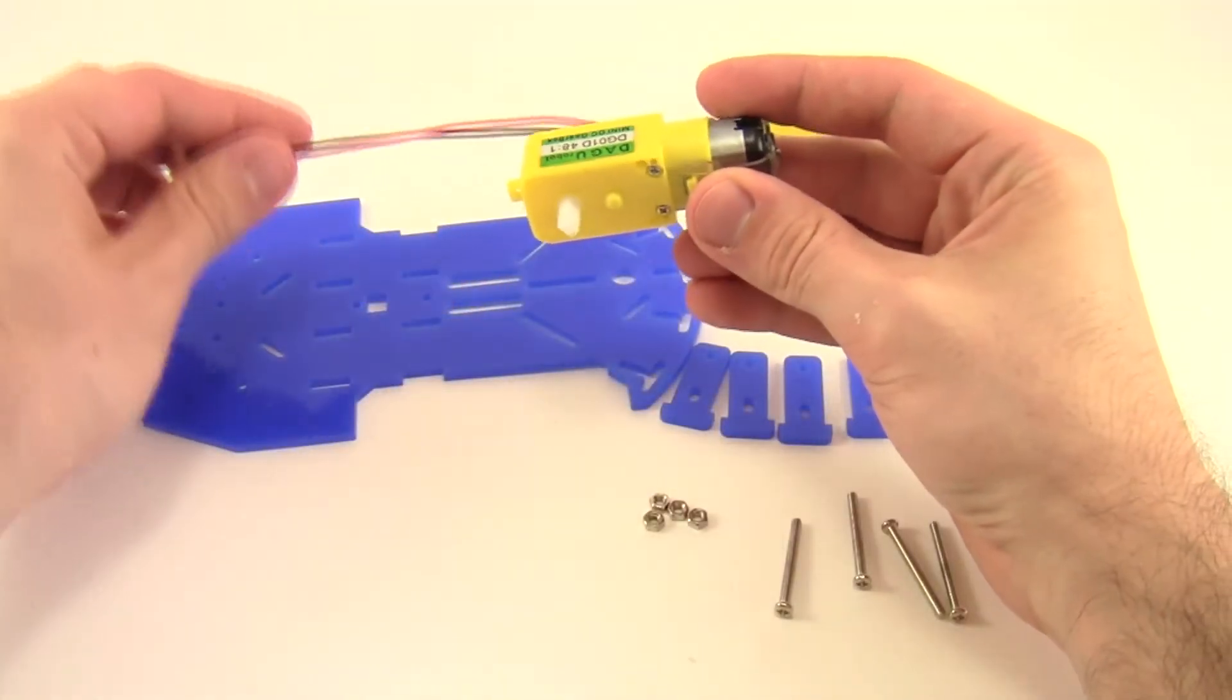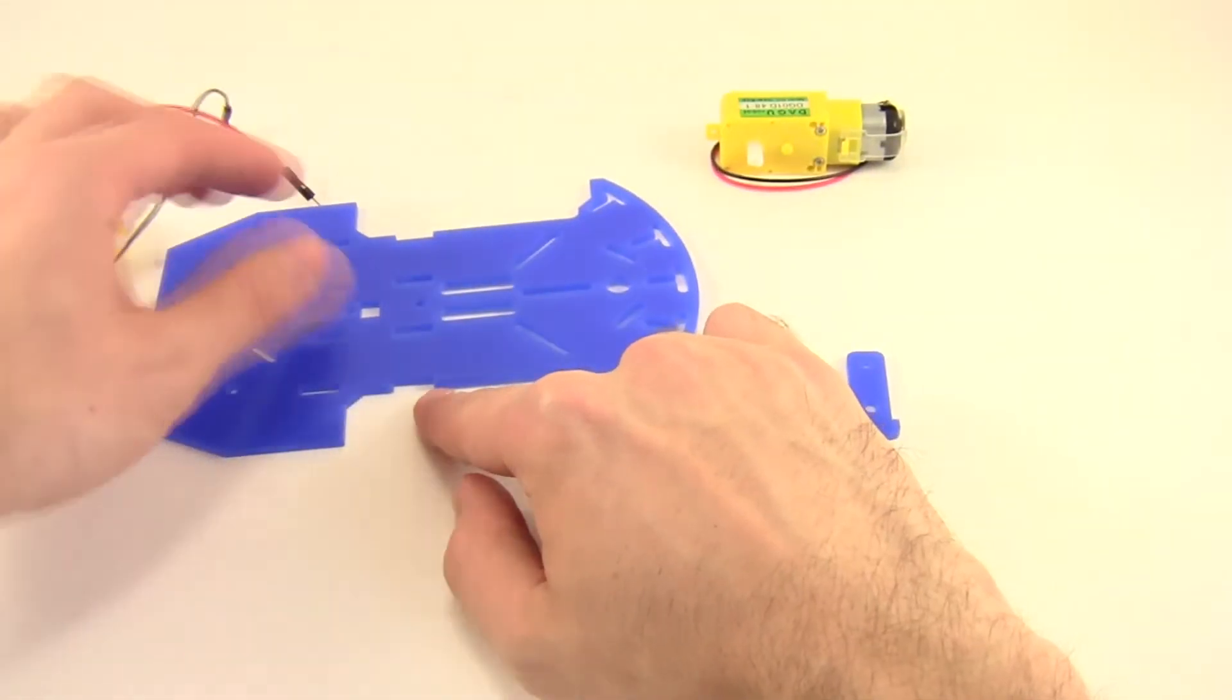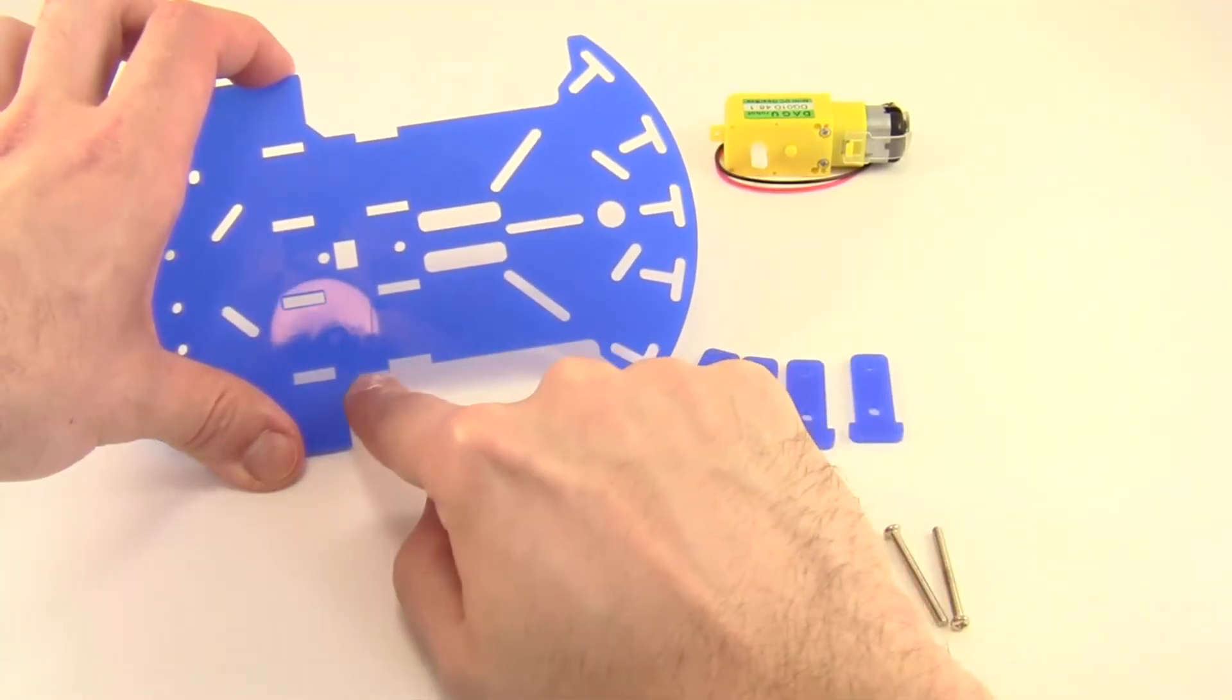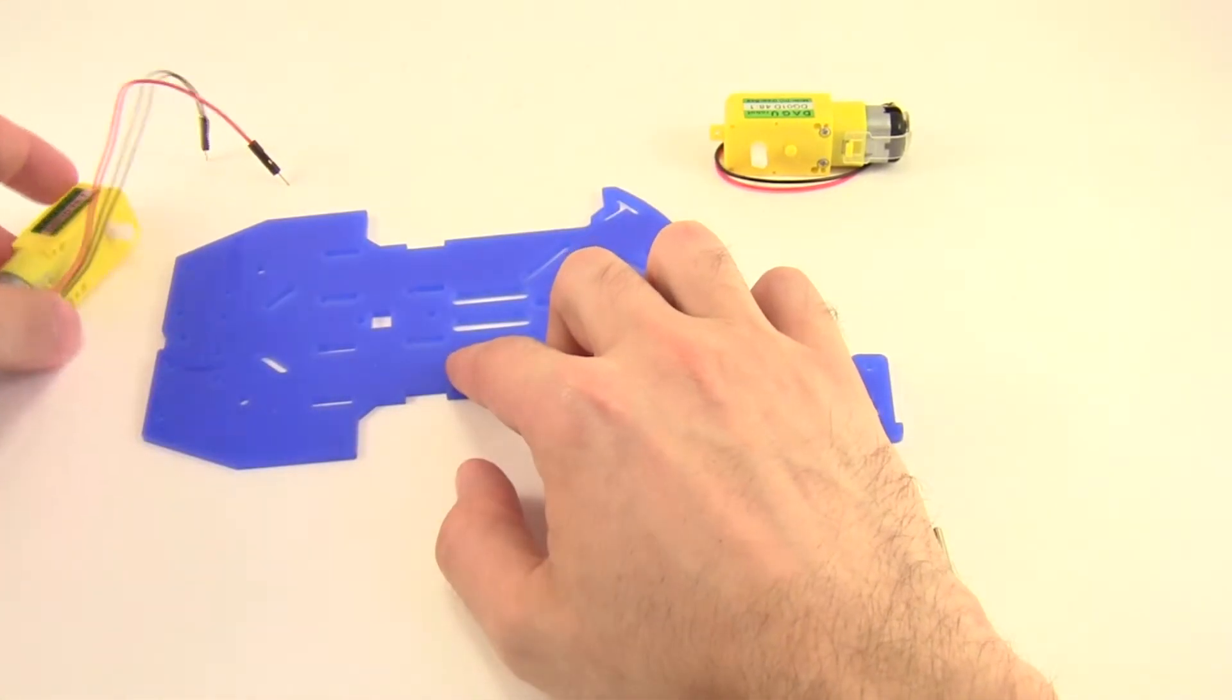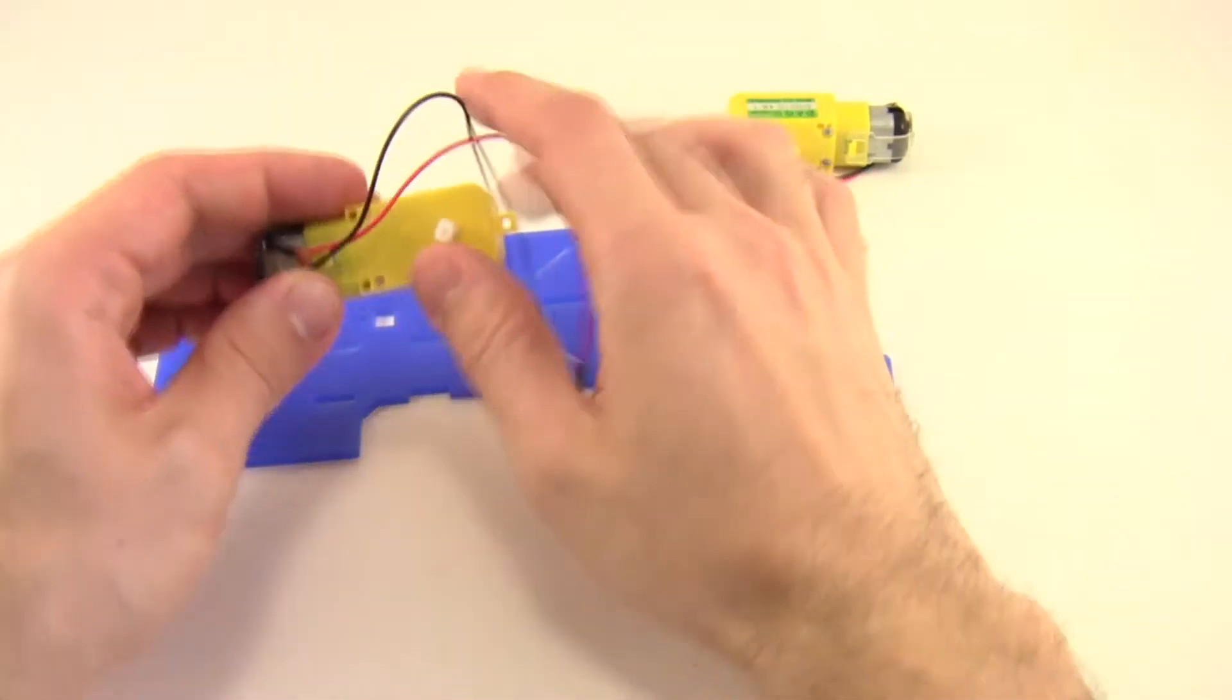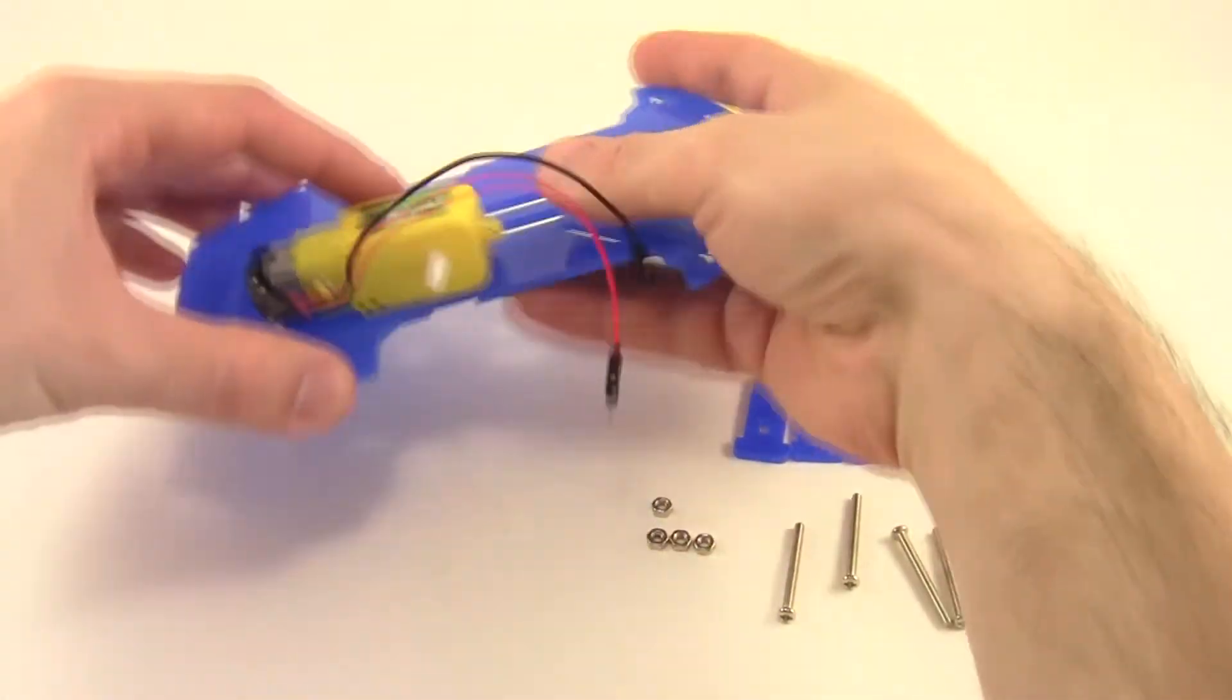So the first thing you're going to do is take one of your motors and line it up. Look at the side of the bottom plate, this blue piece of plastic, and see how there's a little notch in the side here. You're going to take your motor and line it up such that these holes in the side of the motor are lined up just above that notch. And notice which way my motor is facing.